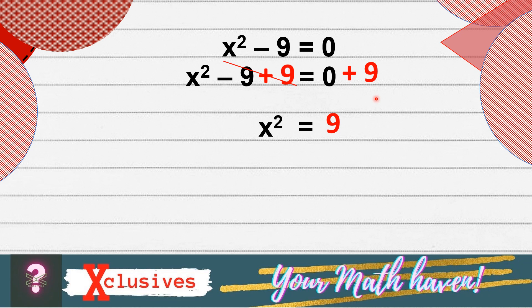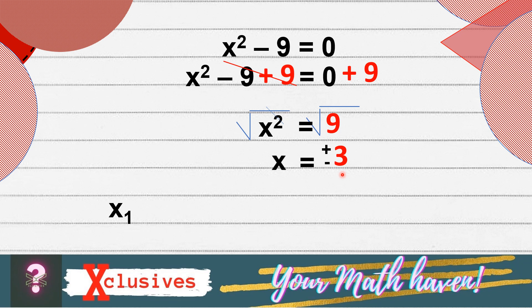Now, we can do extracting the square root of both sides. The square root of x squared is x, is equal to the square root of 9, that is 3. But it is not only 3, we have also negative 3. So, the square root of 9 is positive 3 and negative 3. So, our x sub 1, we can use the positive value and that is positive 3. And our x sub 2, we will use the negative value, that is negative 3.